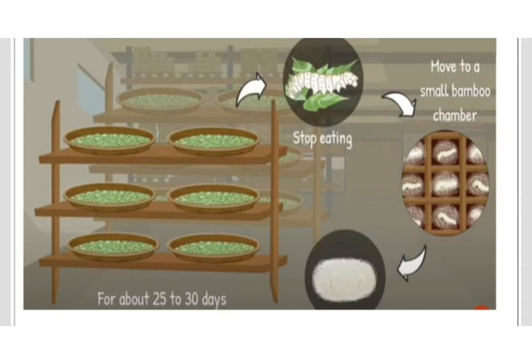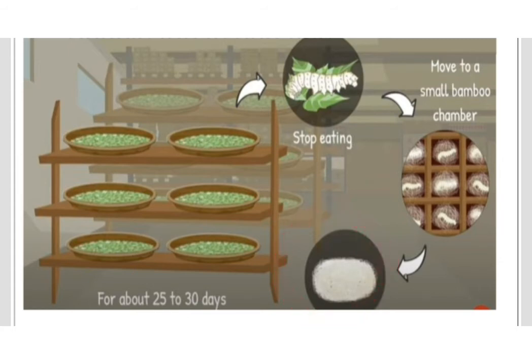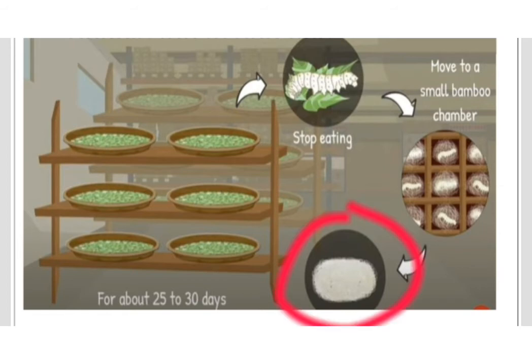After 25 to 30 days, the caterpillars stop eating and move to a tiny chamber of bamboo in the trays to spin cocoons. Small trays or twigs may be provided to which the cocoons get attached, and the caterpillars or silkworms spin the cocoon inside which the silk moth develops.